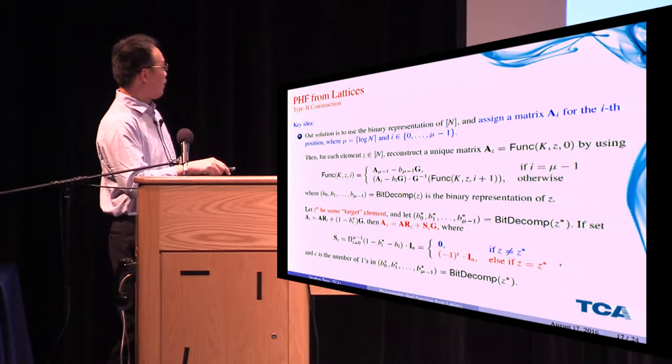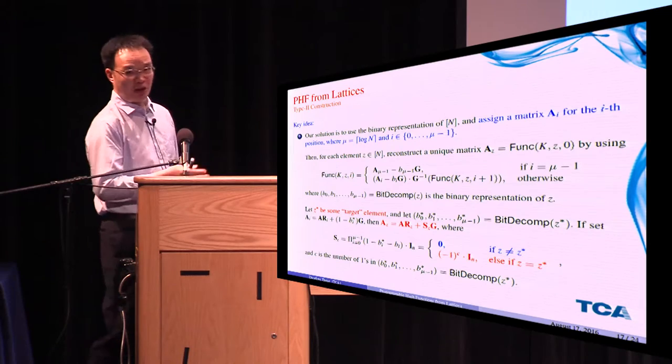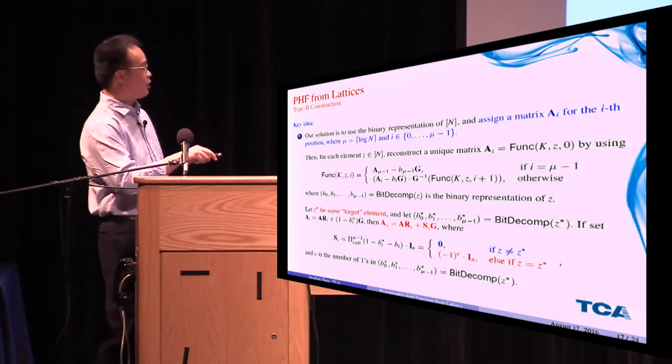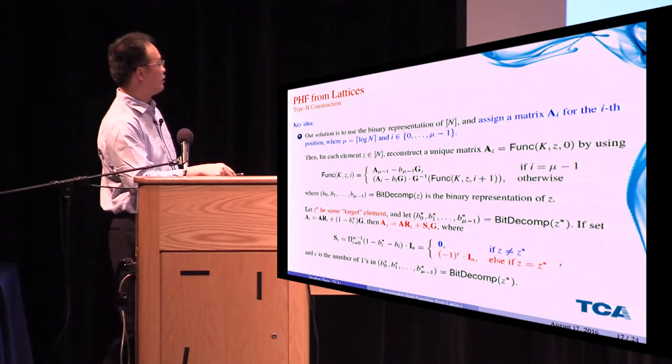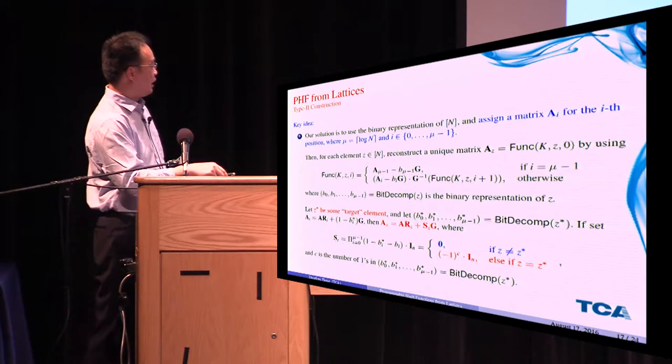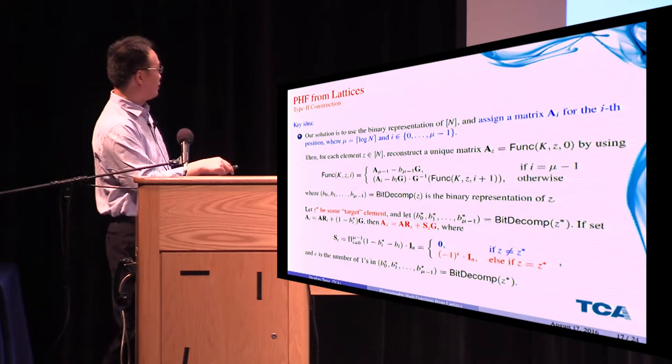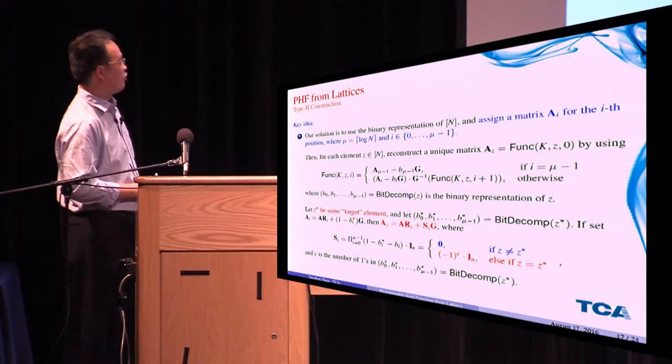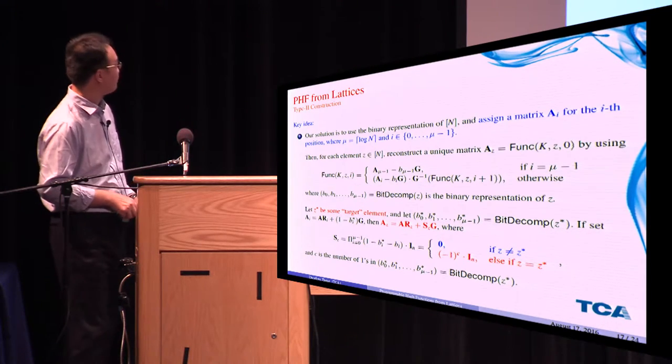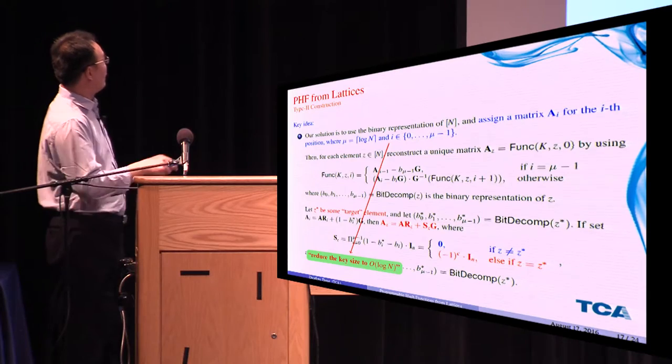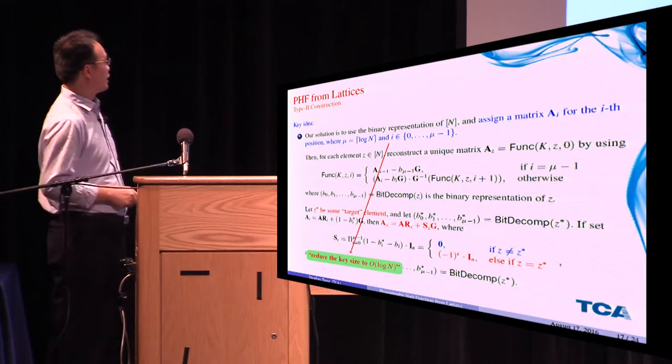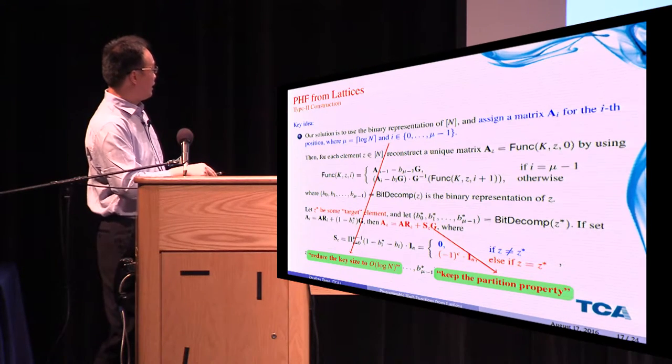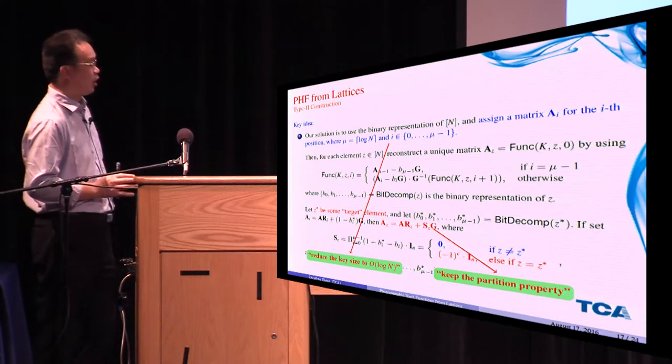Let Z star be some target element, and let b0 star to b_{mu-1} star be the binary representation of Z star. If we set Ai in this form, then we get that A_z is actually A·rz plus Sz·G for some rz, and Sz has this form, a product of (1 minus b_i star minus bi) times identity. And so for this Sz, if z is different from z star, there is always one term equals to zero, so Sz is zero. If z equals to z star, then we can deduce that Sz equals to (-1)^c times identity, where c is the number of ones in the binary representation of z star. By this binary representation, we can reduce the key size to log N, and by this effect, Sz has this form, we can keep the partition property for PHF.